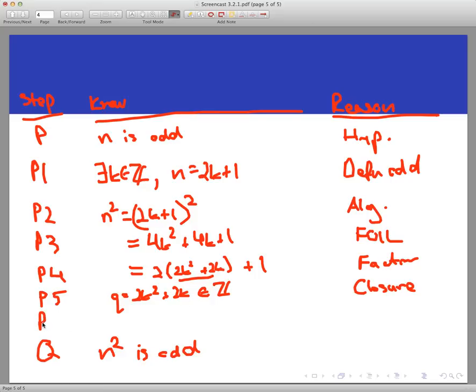is I now have written n squared is equal to 2q plus 1, where q is an integer. And again, I've done that by setting q equal to 2k squared plus 2k. And then that gets me to the n. Now that I've written n squared is equal to this form right here, I know n squared is odd. So that's the definition of odd.